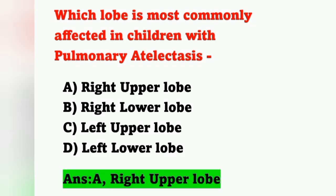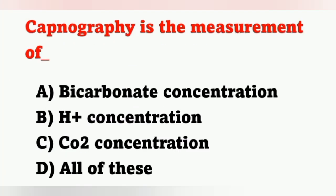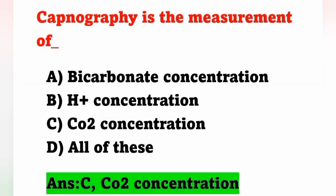Next question: capnography is the measurement of — option A bicarbonate concentration, option B hydrogen ion concentration, option C carbon dioxide concentration, option D all of these. Capnography is the measurement of carbon dioxide concentration. Option C is the correct answer. Capnography measures the concentration of carbon dioxide in both inhaled and exhaled air.